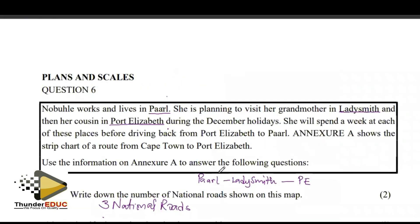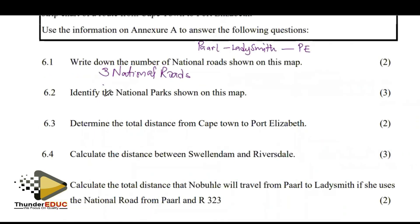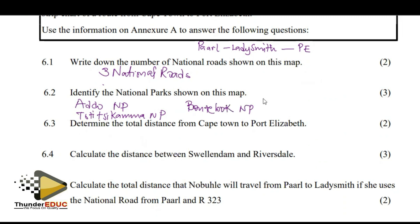Identify the national parks shown on the map. We have one, which is NP. Then we went to the next — it's another NP. And the last one is Bonte NP. That's what we are identifying.